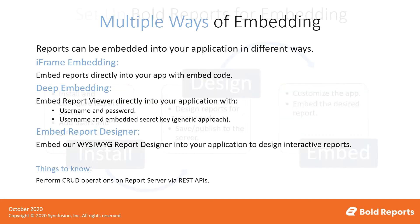Reports can be embedded in two main ways: iframe embedding and deep embedding. Iframe embedding renders the report inside an iframe, where authentication is supplied from the report server — you just copy the embed code and paste it in your app. Deep embedding places the report viewer component directly into an application like any other component such as a grid or chart, rendering reports without additional requests. Authentication tokens must be passed to render reports securely. The token can be generated via username and password, or via username and embed secret key.